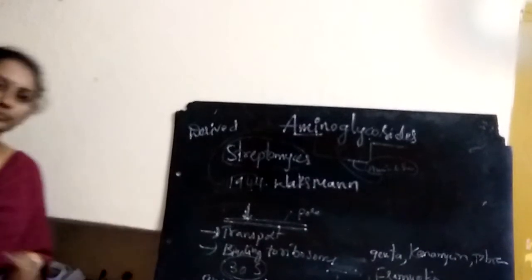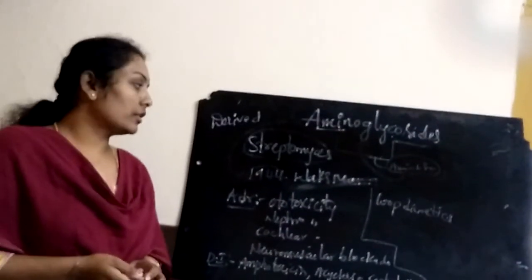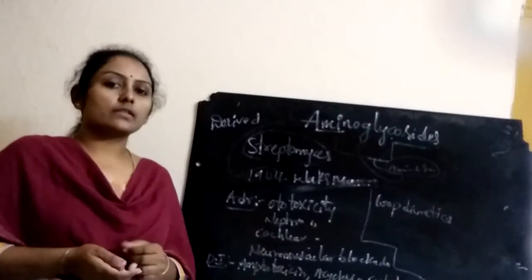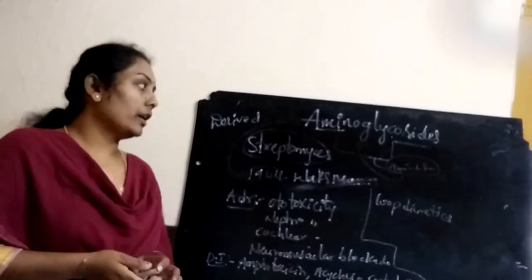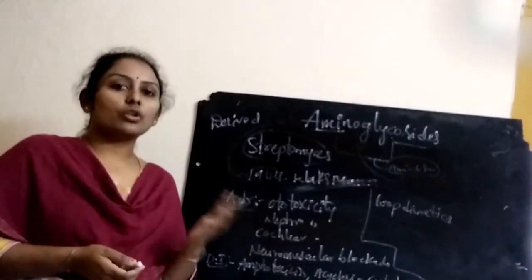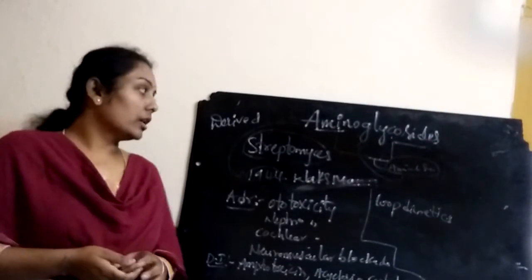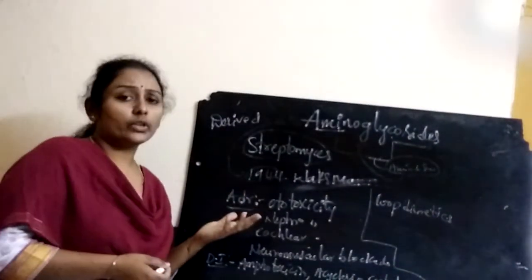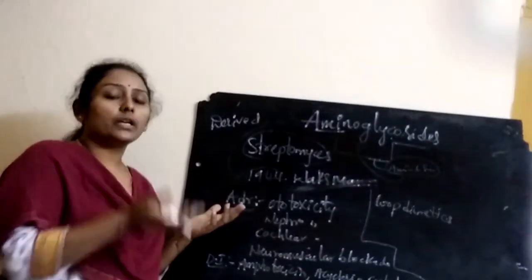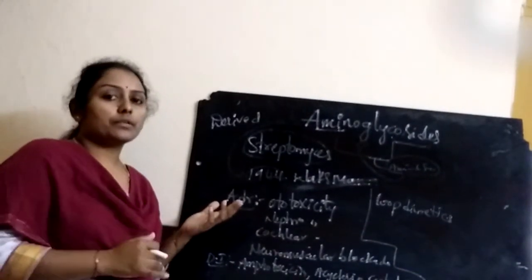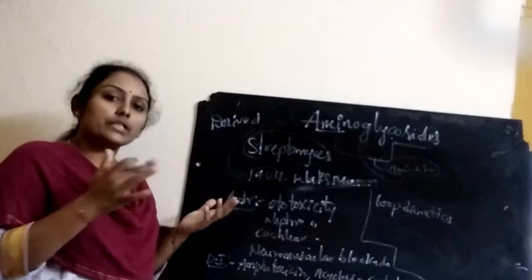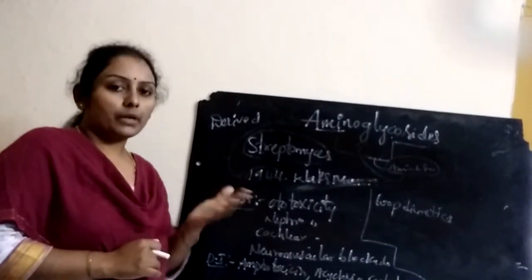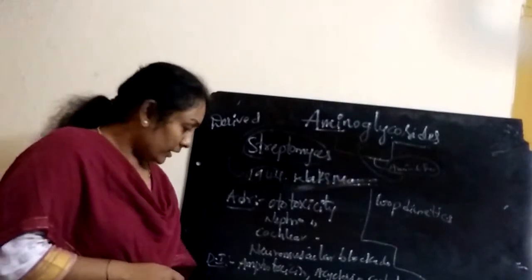Regarding pharmacokinetics, aminoglycosides have poor oral absorption and are mainly absorbed through the IV or IM route. Only about 1% of the drug is absorbed, while the remaining 95–99% is excreted or eliminated through the urine by the kidneys.